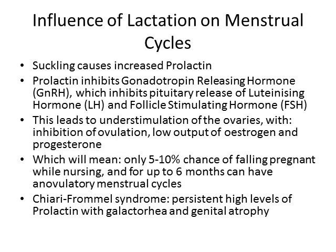Practically, that means that when a woman is breastfeeding, her chance of falling pregnant is only about 5–10%, and it can take up to 6 months before ovulation is properly re-established with each menstrual cycle. Many women actually use breastfeeding as a form of contraception.